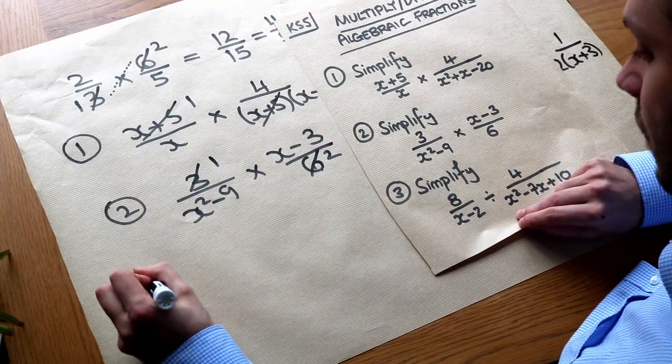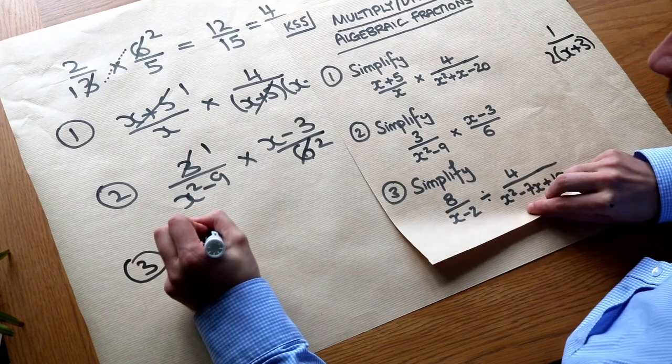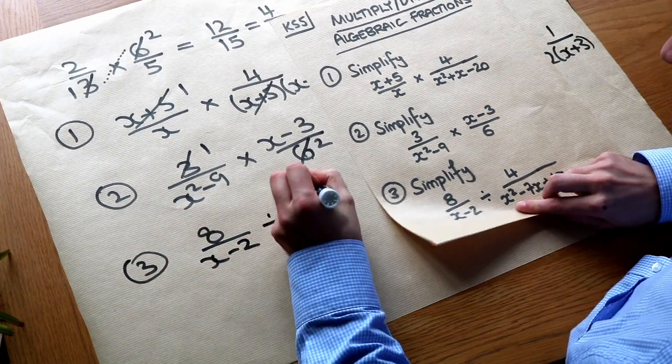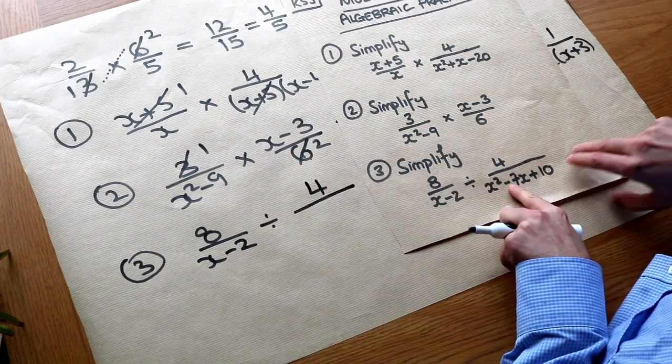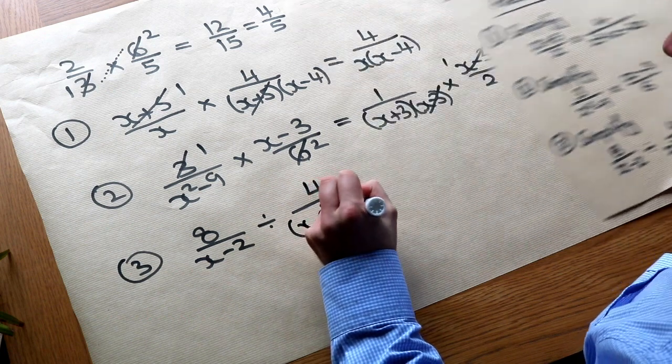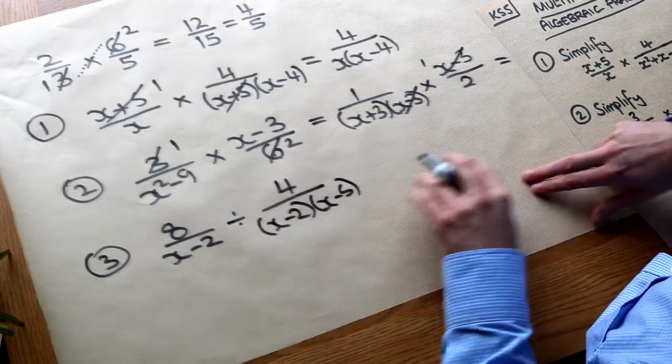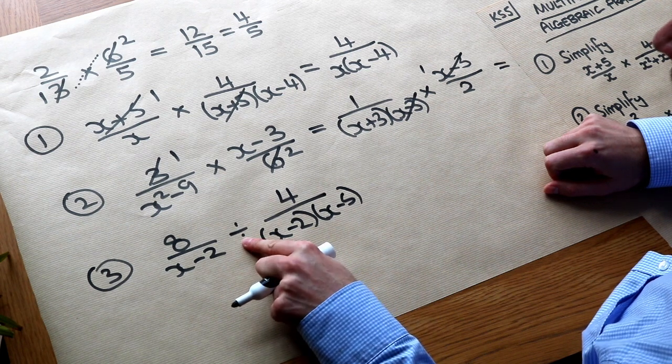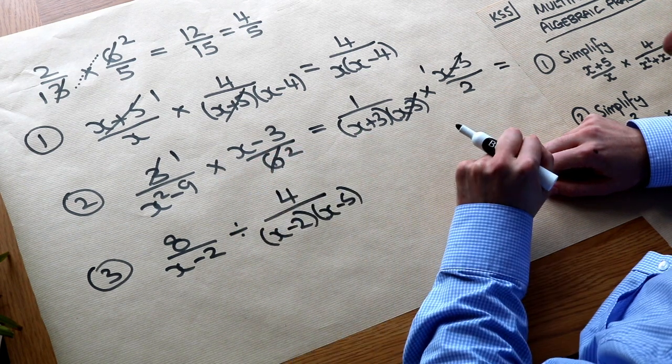And then finally question 3 we've got a division this time. So we've got 8 over x minus 2 divided by 4 over, and I'm just going to factorize this immediately, x minus 2 times x minus 5.